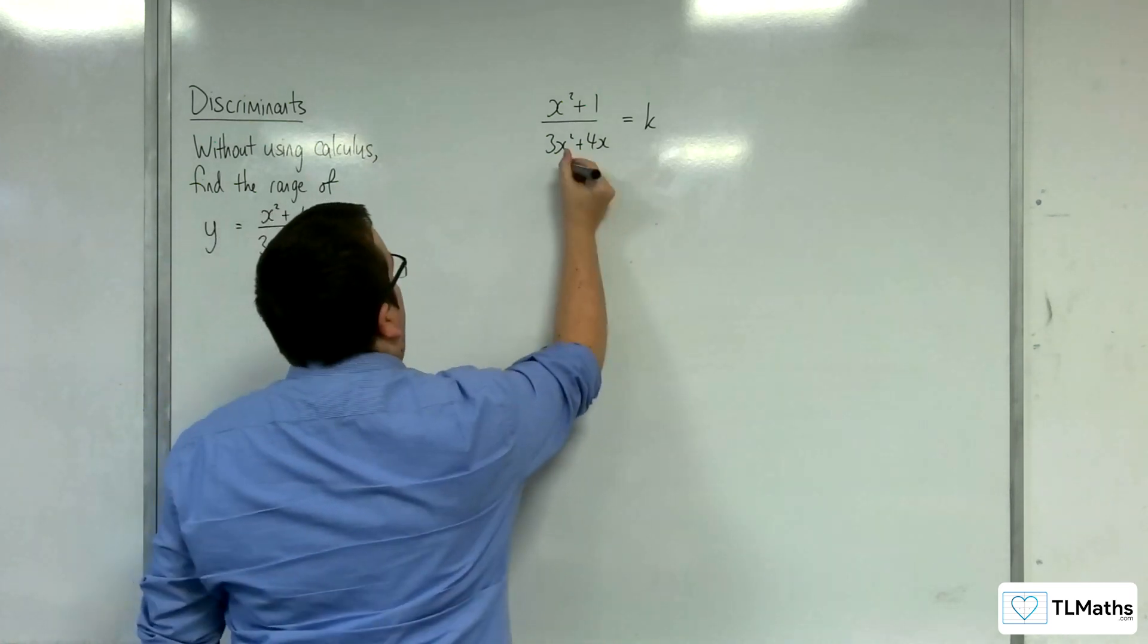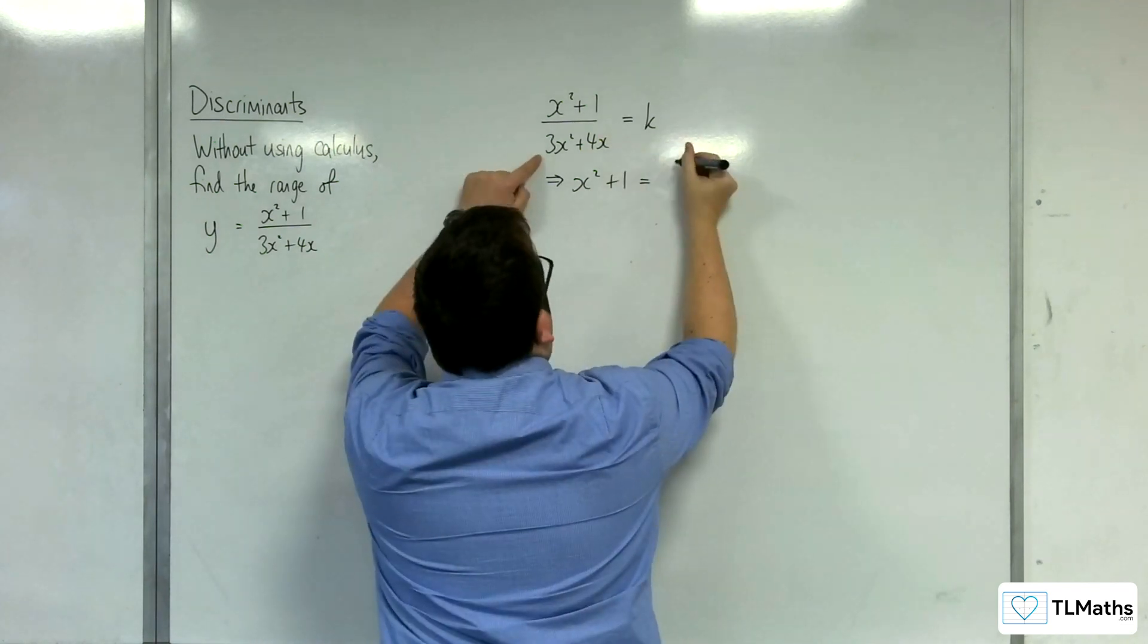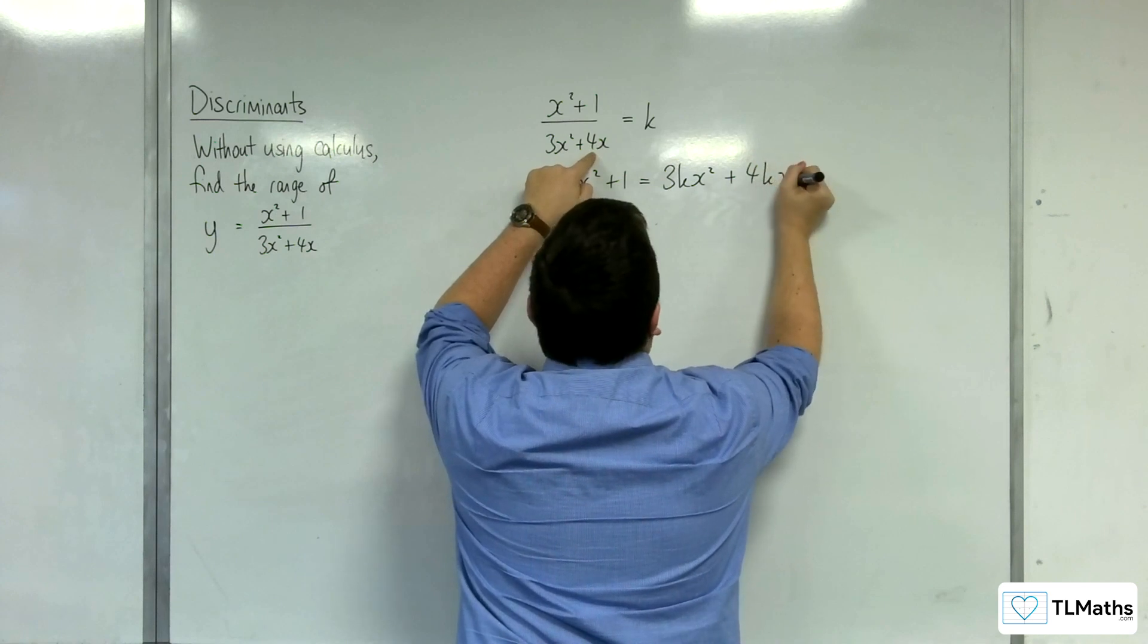So I'm going to multiply it by the denominator. So we get x squared plus 1 is equal to k times 3x squared. So 3kx squared plus 4kx.